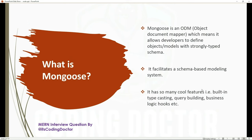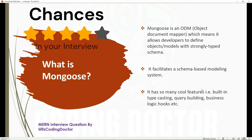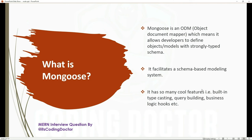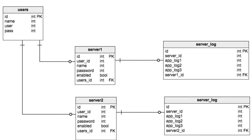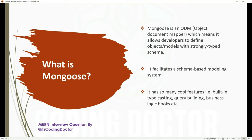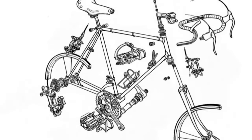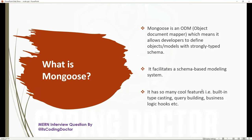The next question is: what is Mongoose? Mongoose is an ODM — that's Object Document Mapper — which means it allows developers to define object models with a strongly typed schema. Strongly typed schema means you define in advance the type of each field. For example, if a field type is set to Boolean, it will only accept true or false — supplying anything else throws an error. It also facilitates a schema-based modeling system with features like built-in type casting, query building, and business logic. This question is likely to be asked if you are a fresher.